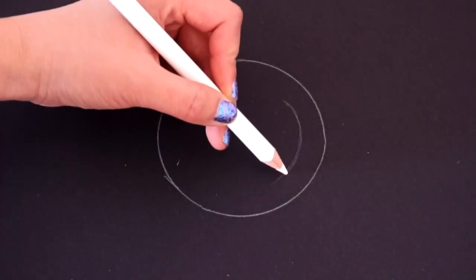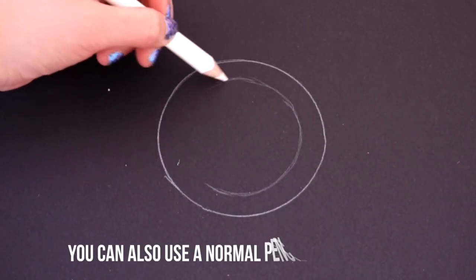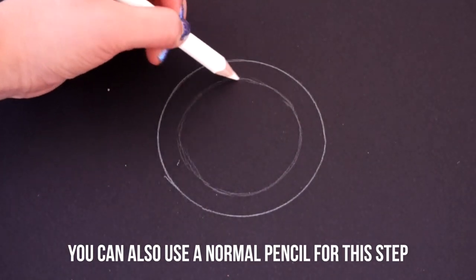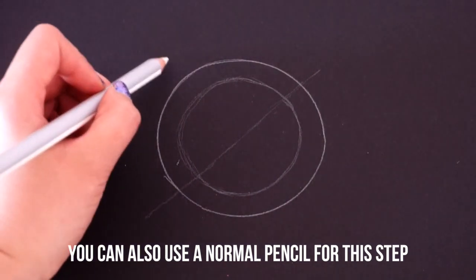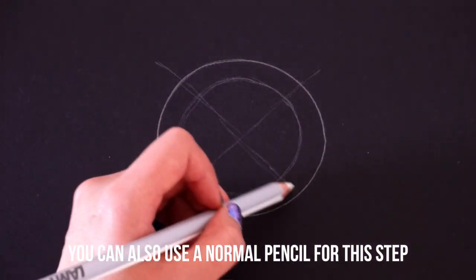Now sketch a smaller circle about one-third of the way inside and then draw an X shape that extends out in all directions. Both of these are guidelines so they don't have to look perfect and you should also take care not to press too hard.